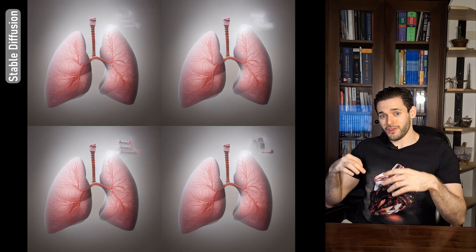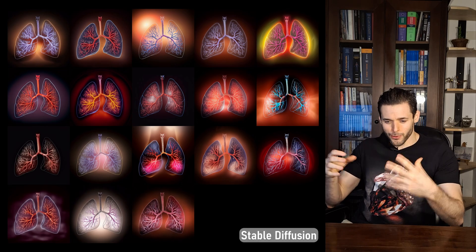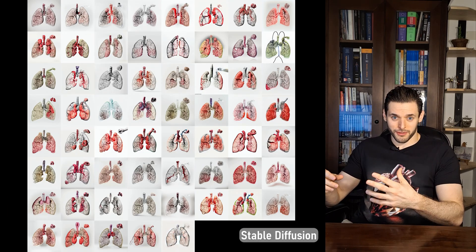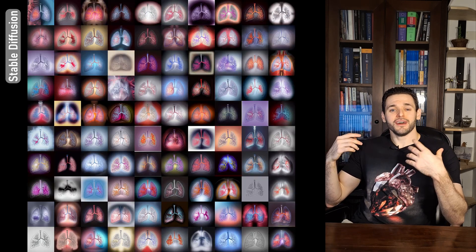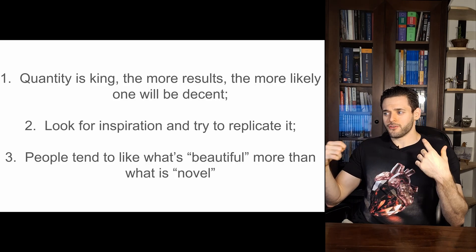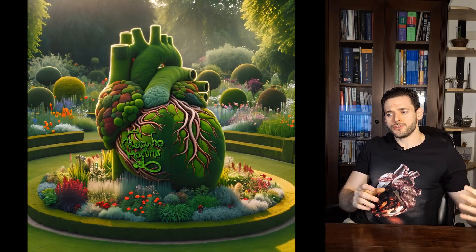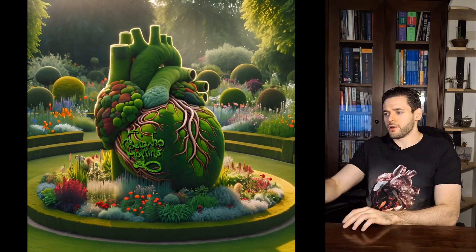The more results you produce, the more likely you will get at least one good one. So rather than trying to get the perfect prompt the very first time, just experiment with it. Create hundreds of images and then choose the best one. Look for inspiration, get your clear vision, and then try to replicate it. If you visit somewhere interesting, or see something on TV or in a movie, try to think how that could apply to your area of expertise — for example, to anatomy. Then create in your mind a clear vision of what you are thinking about, and try to convert that image towards your vision.